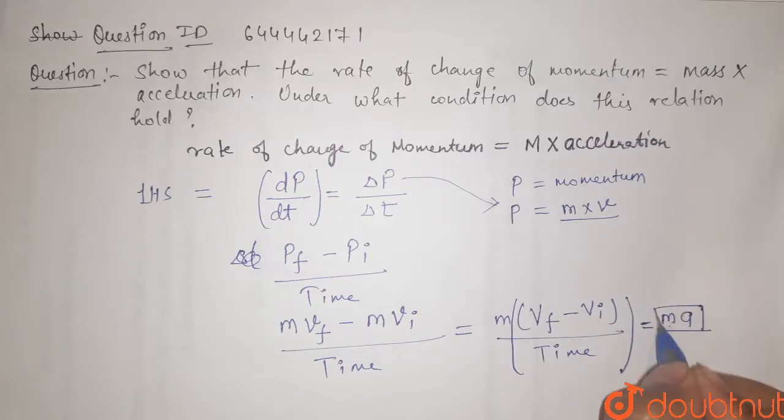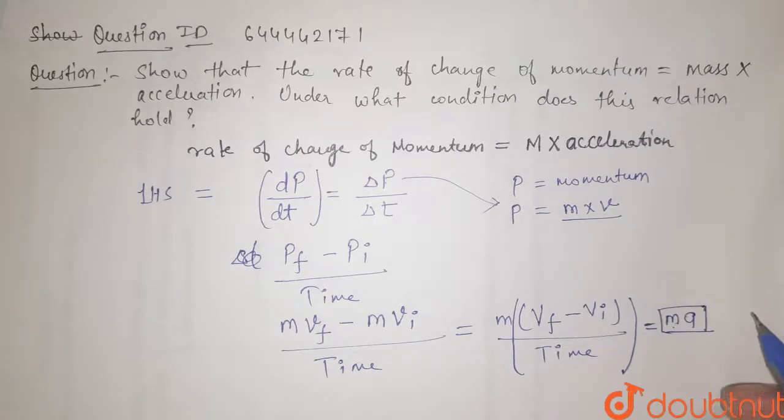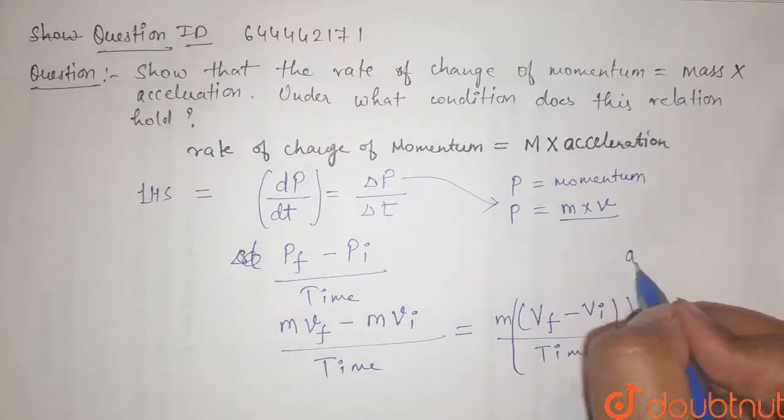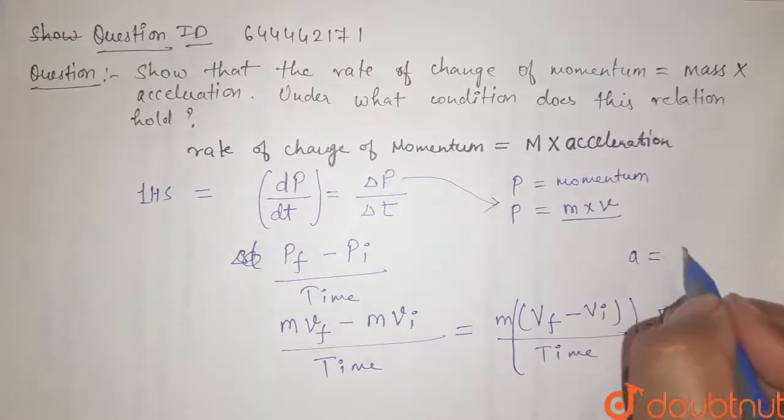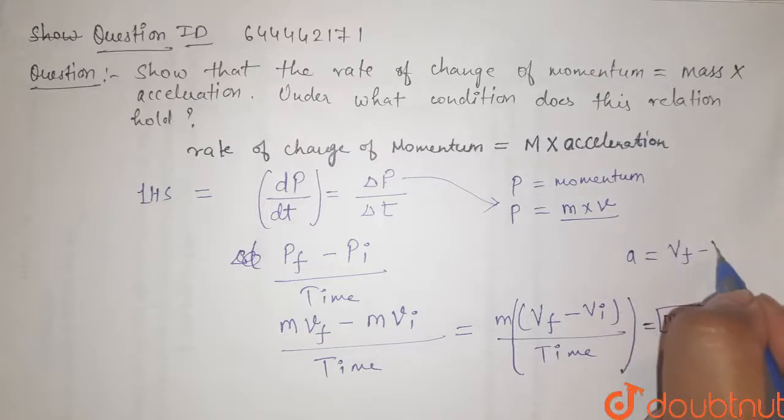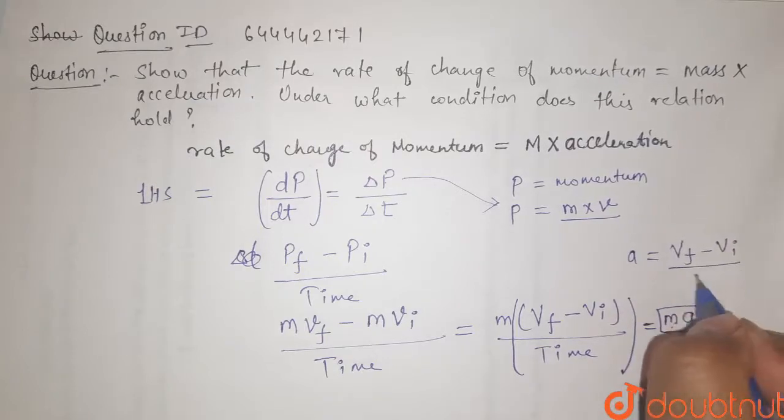So, this is our required relation. Here what we get is A, that is acceleration equals v final minus v initial upon time.